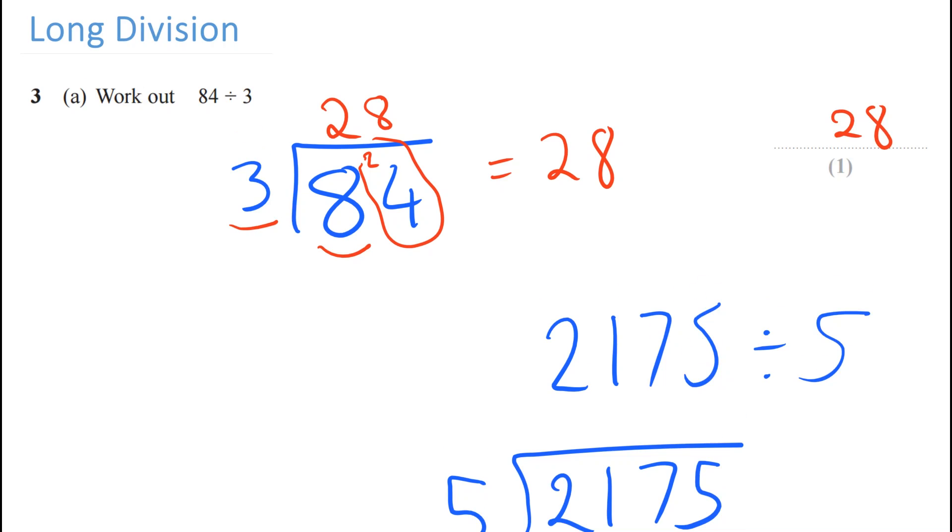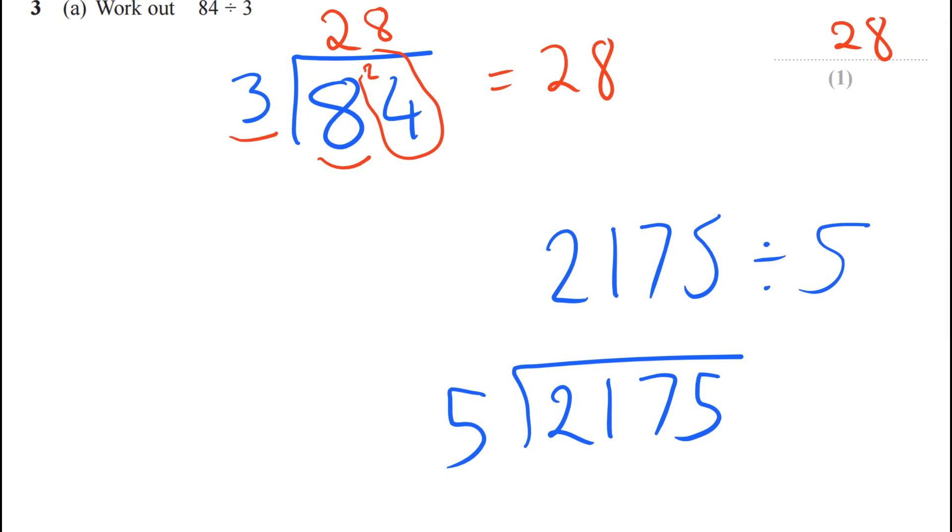Let's do another example. This example here. So 2175 divided by 5. Does 5 go into the first number? No. 5 can't fit into 2. So you look at the first 2 numbers. 21.